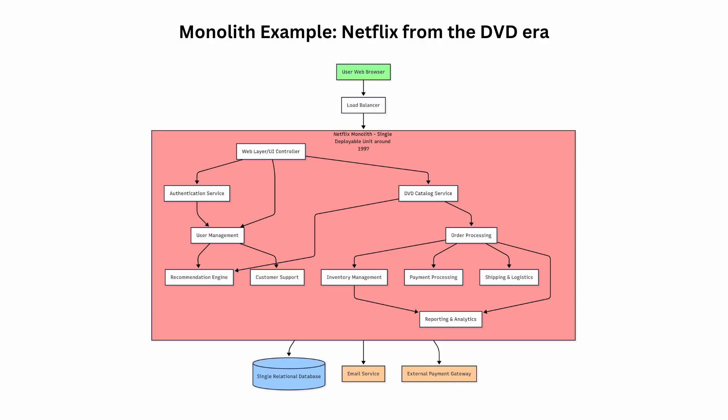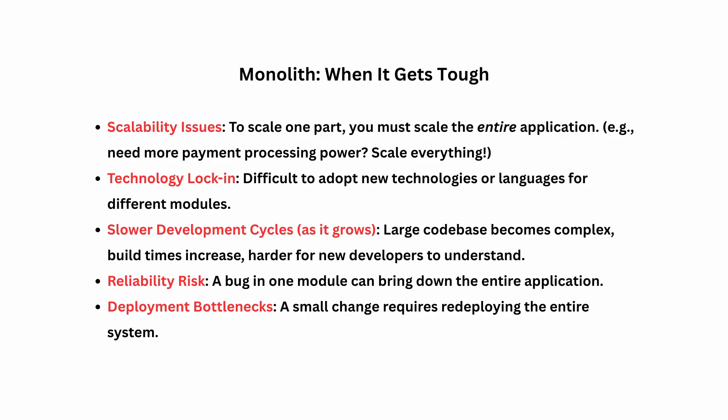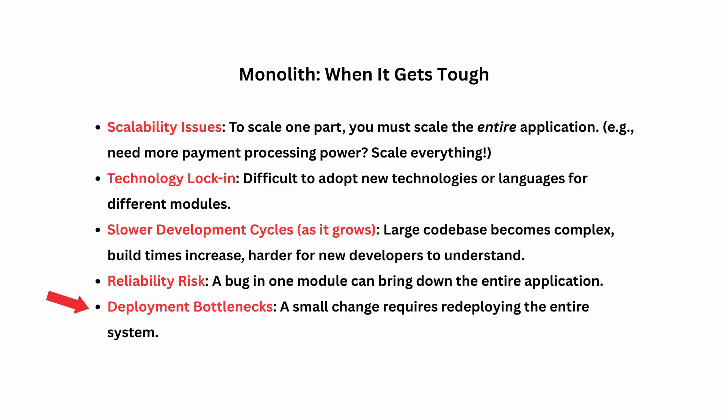This eventually led Netflix to migrate to microservices architecture. As your application grows, the monolithic approach can start to show cracks. Scalability becomes a problem — imagine in our department store, one specific shop in the food court gets super popular; you'd need to expand the whole store. You're often stuck with one technology stack — if your monolith is built in Java and you want to use Python for a machine learning feature, it's tough. The code base becomes too large and harder to understand, and there are reliability risks where a bug in one module can bring down the entire application. Even a tiny change means redeploying the whole thing.